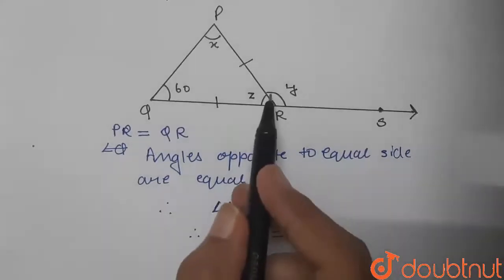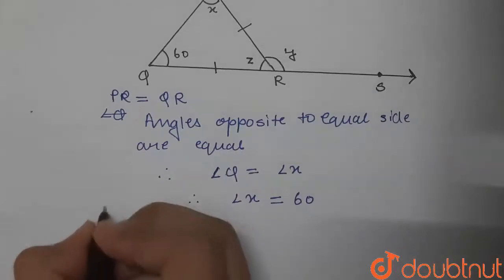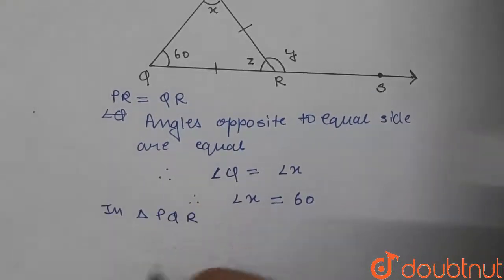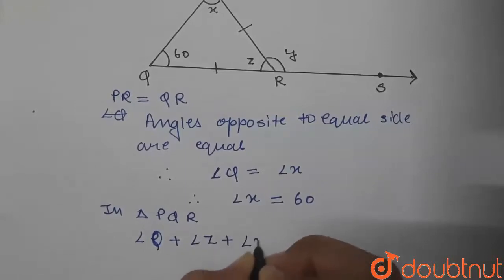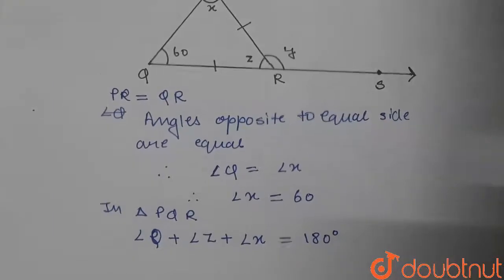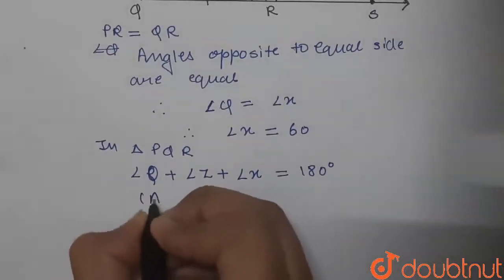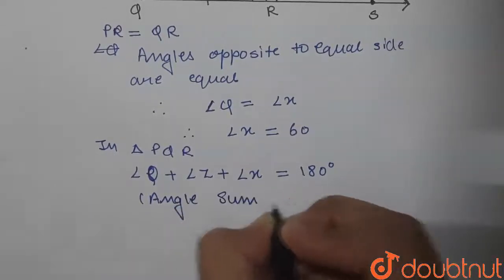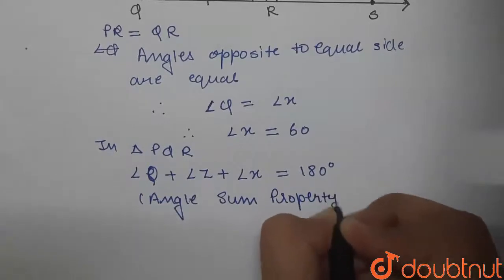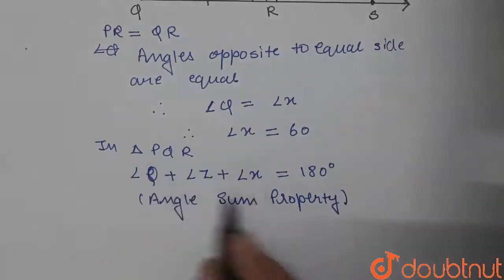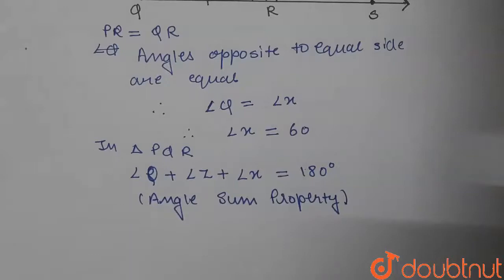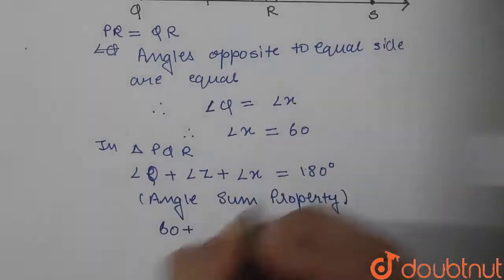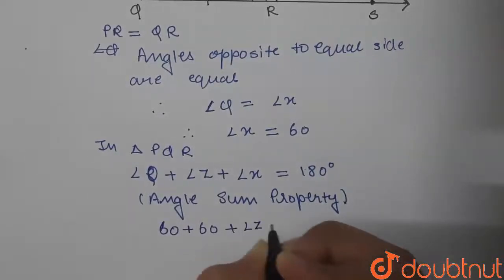Angle opposite to this side is x, and angle opposite to this side is 60°, so the value of angle x is equal to 60° because angle Q equals 60°. Now we need to find z as well. In triangle PQR, by the angle sum property, angle Q plus angle z plus angle x will be equal to 180°. The value of angle Q is 60° and angle x is also 60°.